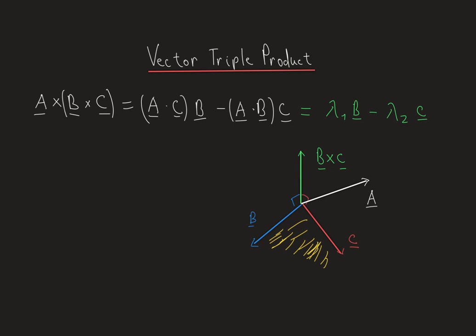A linear combination means that our resulting vector d can be written as scalars — let's call them alpha and beta — multiplied by b and c. This expression is very similar to the formula we have, because we have scalars multiplying vectors b and c.